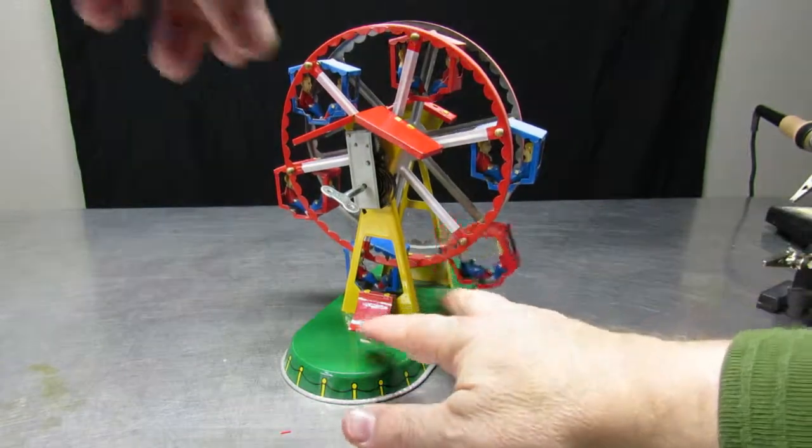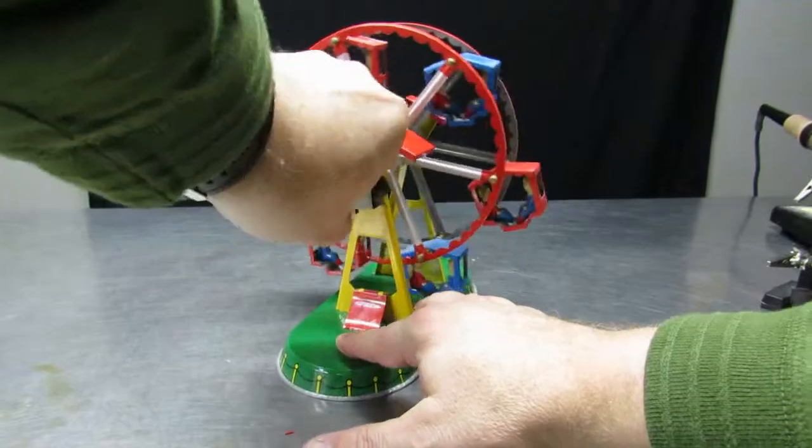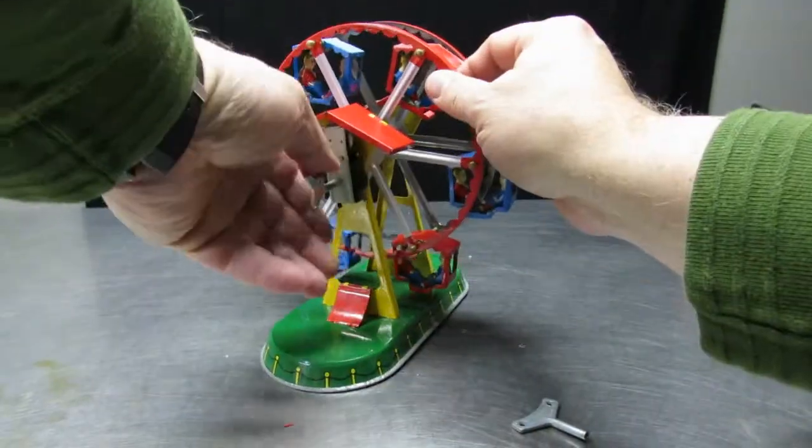The ferris wheel is vertical, that is, up and down, as opposed to the merry-go-round, which is horizontal.